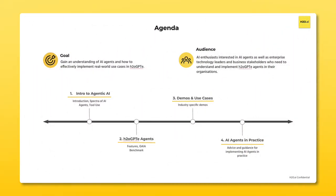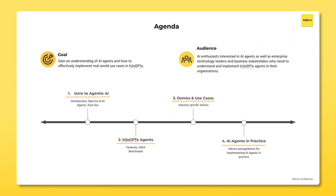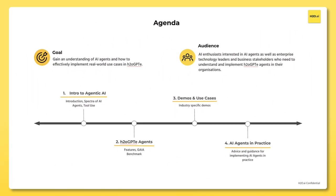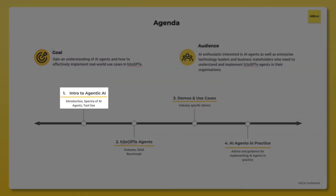On the agenda today: first, we'll be going into agentic AI — what is it — giving an introduction, what are the components of AI, and we'll also be talking about this idea of a spectrum of AI.